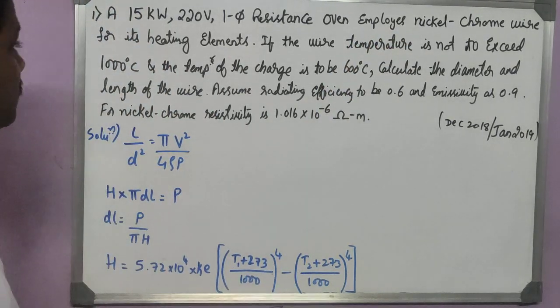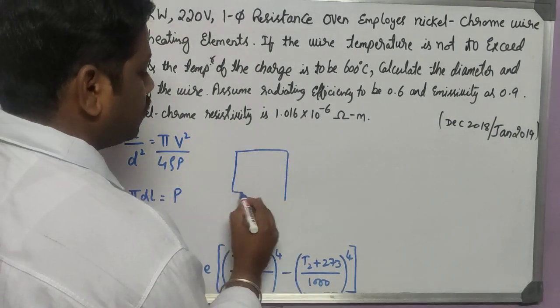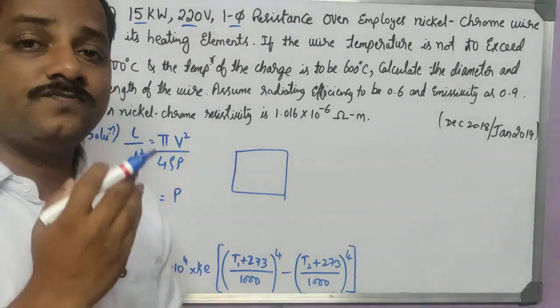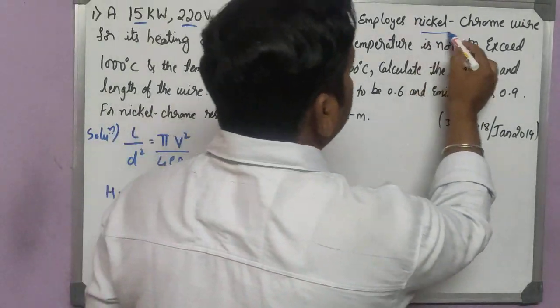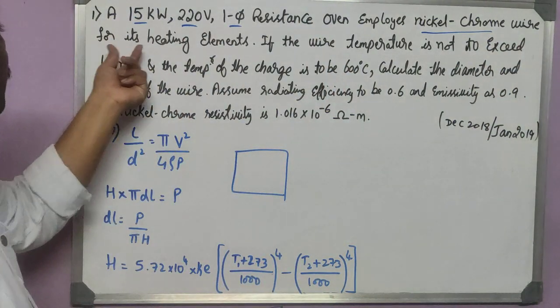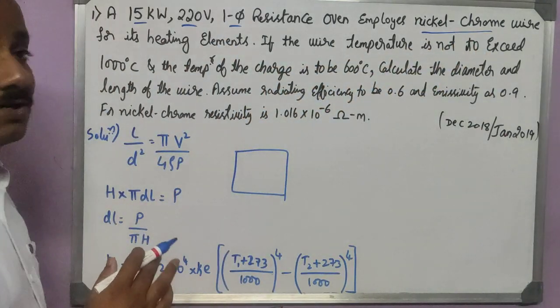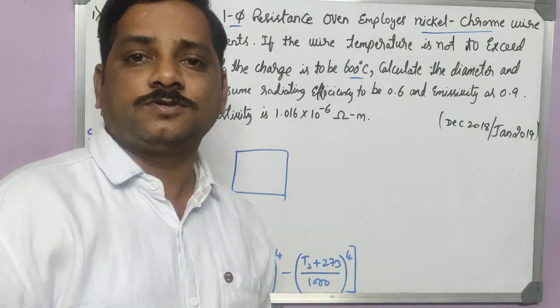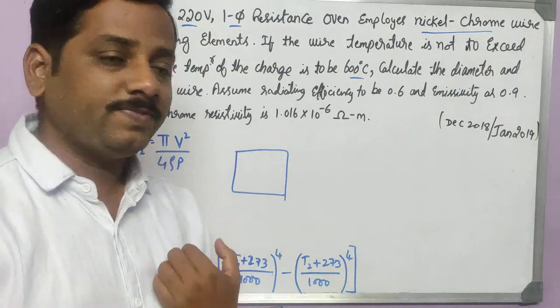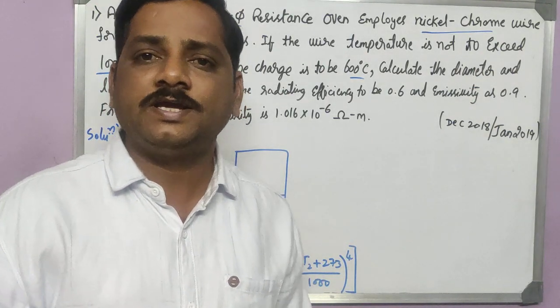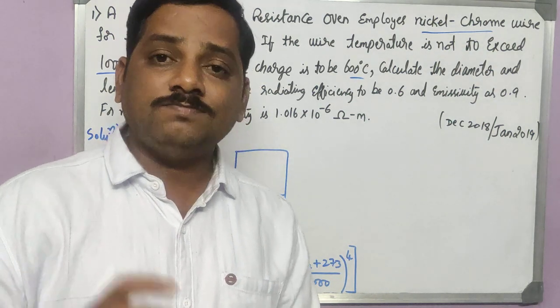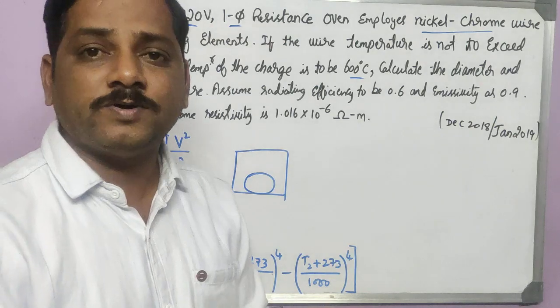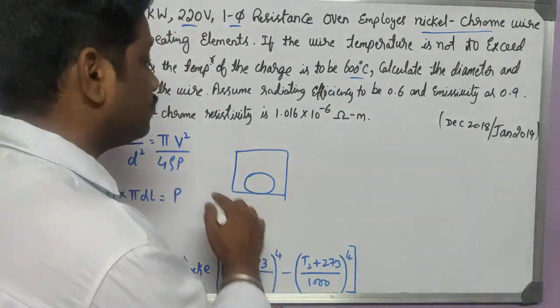A 15 kilowatt, 220 volt single phase resistance oven employs a nickel chrome wire for its heating elements. If the wire temperature is not to exceed 1000 degree Celsius and the temperature of the charge is to be 600 degree Celsius, calculate the diameter and length of the wire. The resistivity is given. The heat developed by this oven through the wire has to be 1000 degrees, but the element placed in the oven can only be heated up to 600 degrees Celsius.